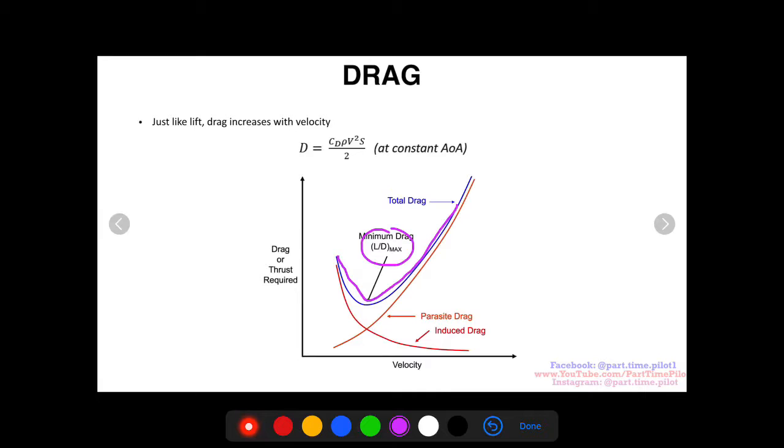This is a point of efficiency that aircraft manufacturers and pilots like to target because less drag means you're flying more efficiently on lift and you're using less thrust or fuel. So right here, this is a ideal velocity where your L over D is max.